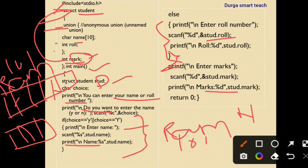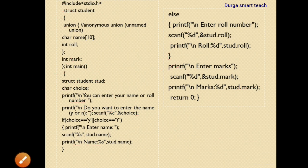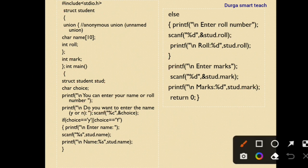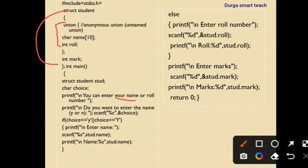Marks are stored in stud.marks — for example, 95. We declare the union inside the structure because union has the benefit of saving memory. The user can enter either name or roll number; at a time, only one of them is stored in that memory. This concept is used to access memory efficiently — that is why unions inside structures are used.